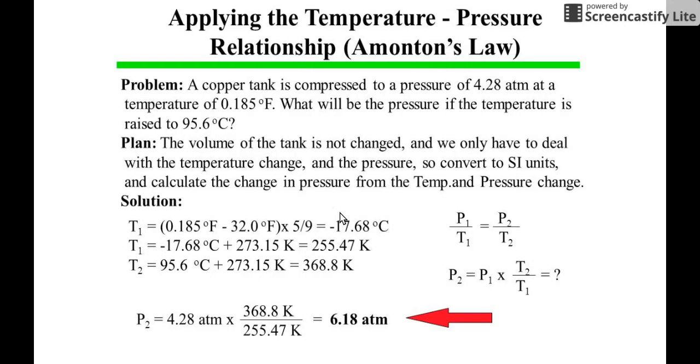Let me show you a sample problem of Amonton's law so we can directly apply the equation. A copper tank is compressed to a pressure of 4.28 atmosphere at a temperature of 0.185 degrees Fahrenheit. What will be the pressure if the temperature is raised to 95.6 degrees Celsius?